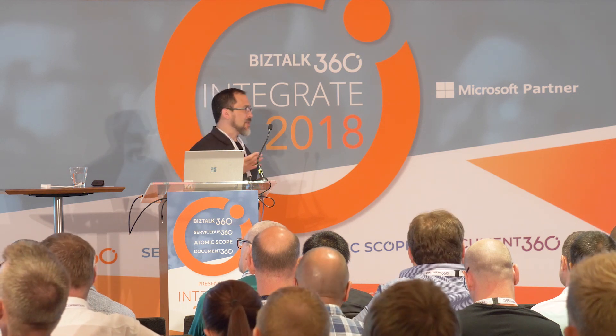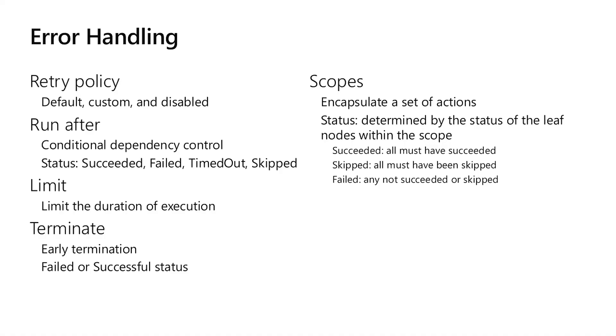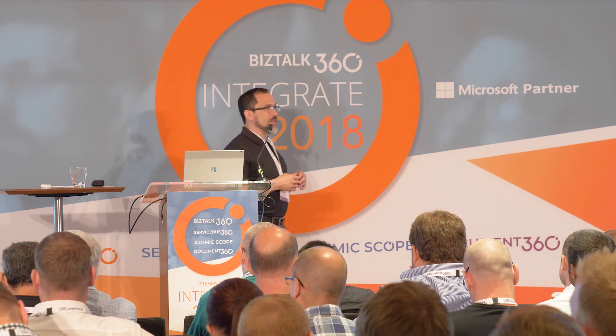You can terminate your Logic App anywhere within the workflow. A typical pattern is to catch an exception and then terminate the action so it doesn't continue executing the rest of your workflow. When you terminate, you can do so with failed or success — for example, if you've handled the error, you don't want your operators to think something's failed, so you can terminate with success.